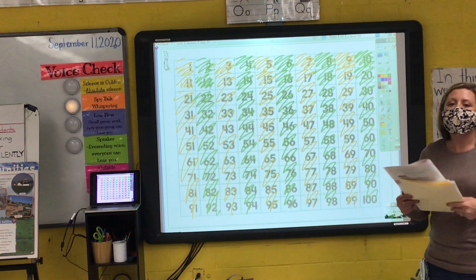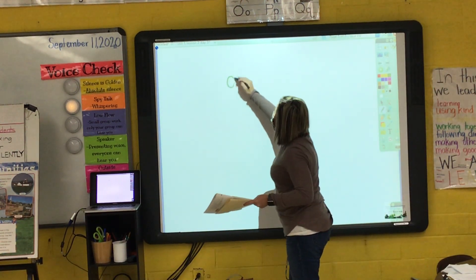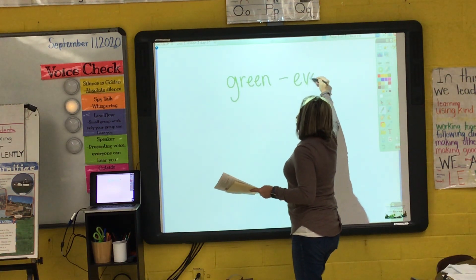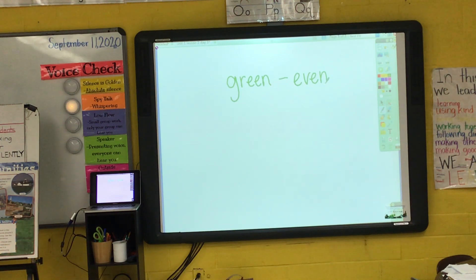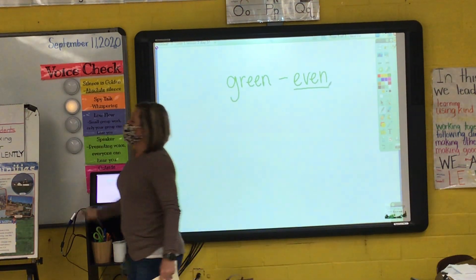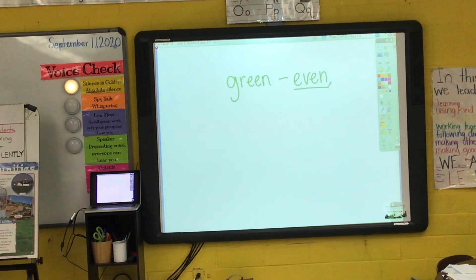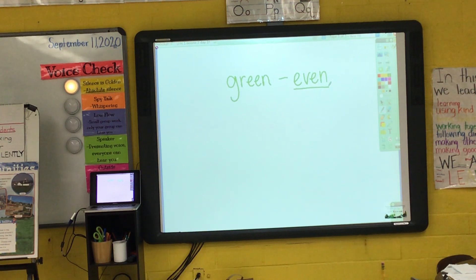We say that the numbers we colored green are our even numbers — I apologize. So underneath your hundred chart, where it says green and then blank numbers, on that line you need to write the word 'even.' So our green numbers are our even numbers. What do you notice about my even numbers? What digits do they all have in them? Look at your even numbers — what digits do all of my even numbers have in them?